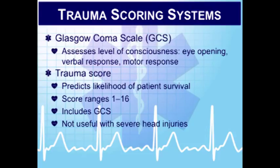Trauma scoring systems are used both pre-hospital and in-hospital to give us some idea of how severely injured our patient might be. The Glasgow Coma Scale (GCS) is one we're all familiar with. A helpful acronym is 'Extra Value Meal $4.56' as a down-and-dirty way to remember what's in the GCS. We're looking at level of consciousness — eye opening, verbal response, and motor response — with a highest score of 15 and lowest of 3. It can also be used to assess patients with medical conditions such as drug overdoses or metabolic disorders.